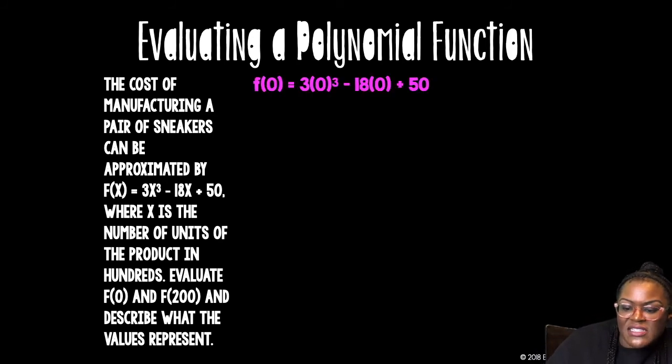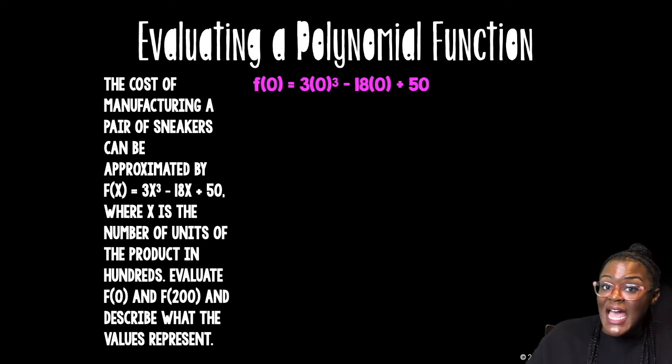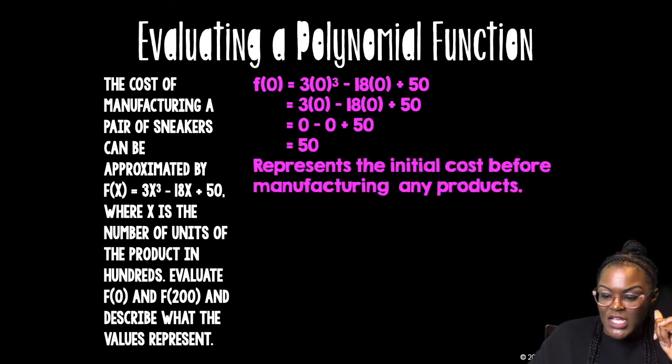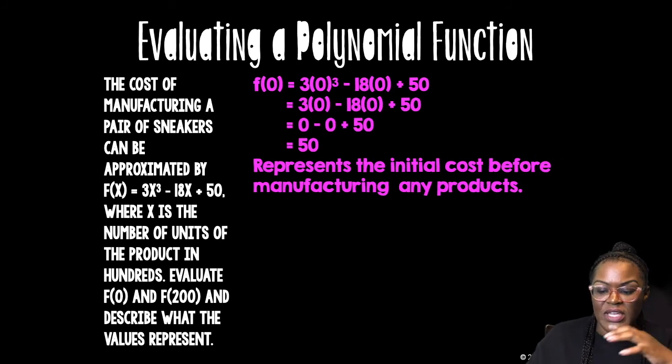So if that's the function, instead of x cubed, it's 0 cubed. Instead of the x next to that 18, it's going to be a 0. So PEMDAS. Don't forget about your PEMDAS. So you have 3 times 0 because 0 cubed is still 0. So exponents first, then multiplication. So 0 minus 0 and then plus 50, 50.